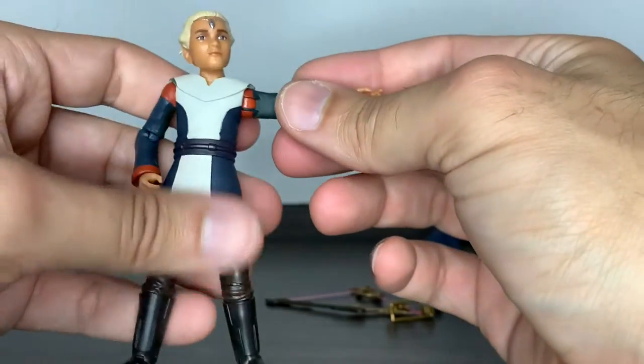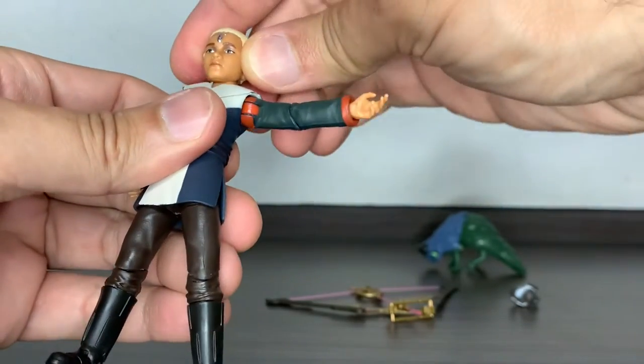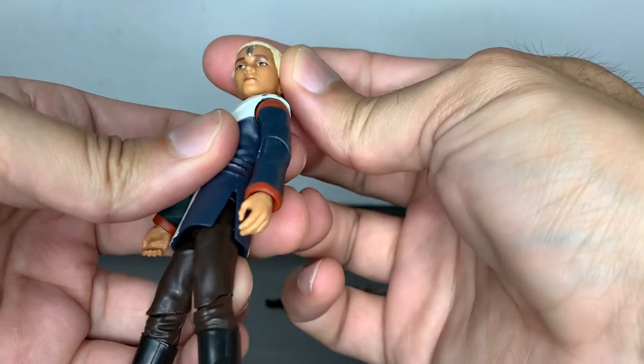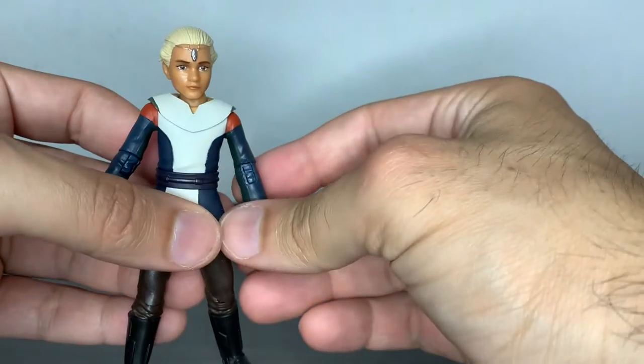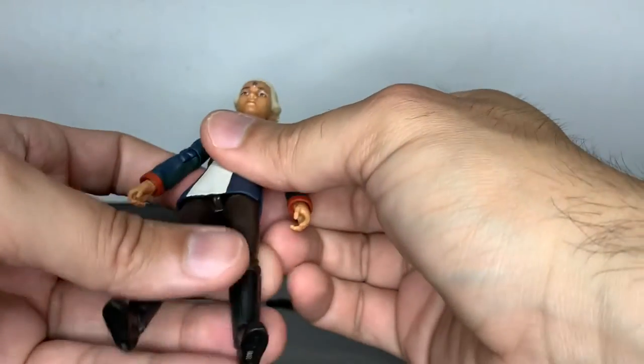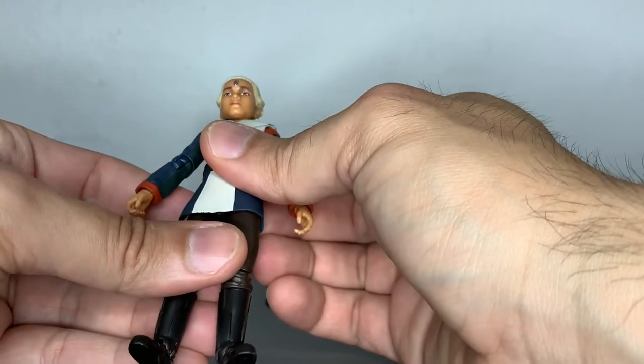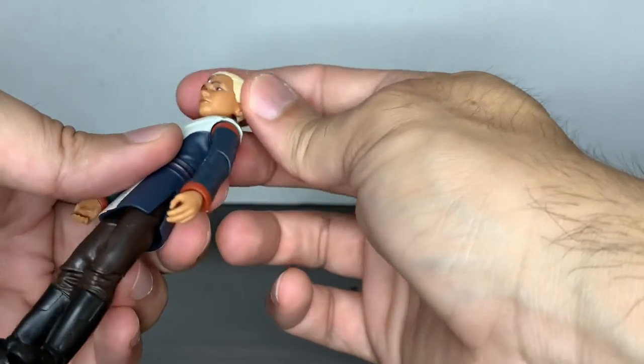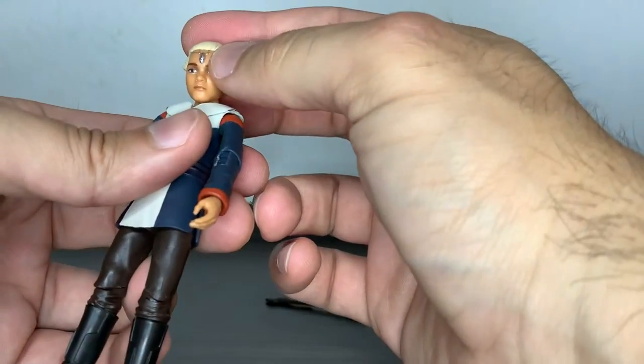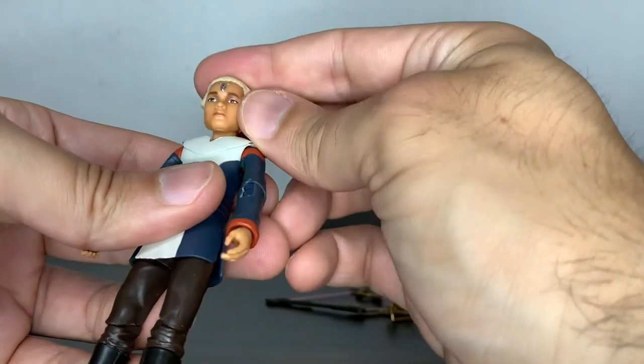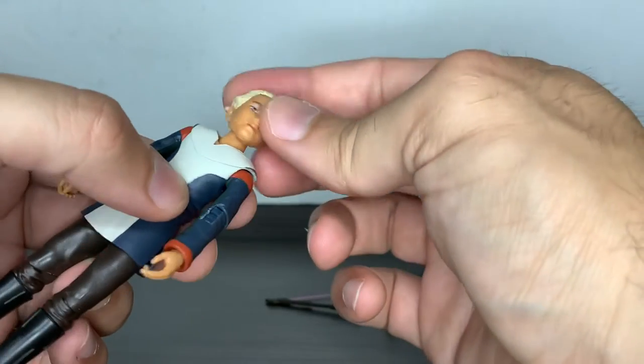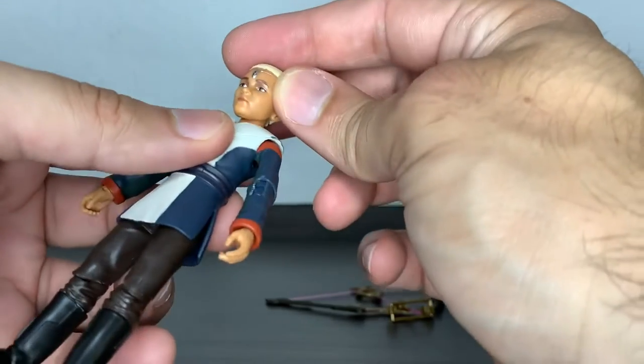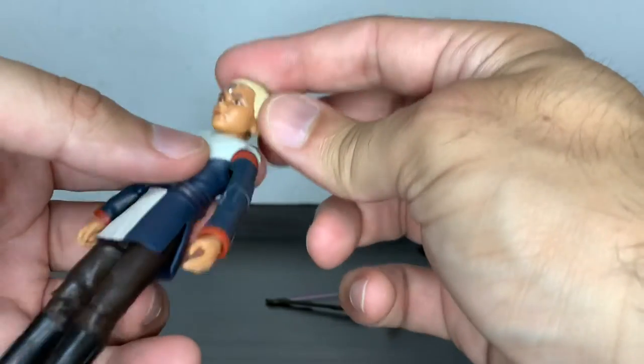Her face sculpt is accurate, it really looks like Omega and also looks kind of halfway realistic between the animated and live action, so you can fit her with other figures. She has her weird haircut, that little amulet on her forehead, and the eyes are nicely applied. Everything is in place.